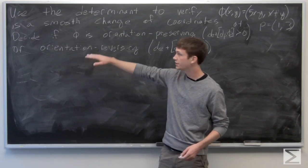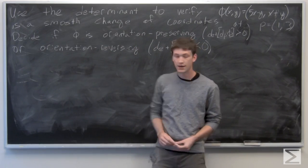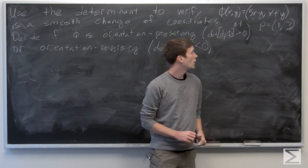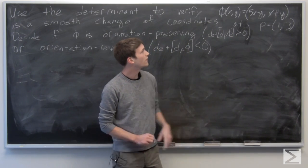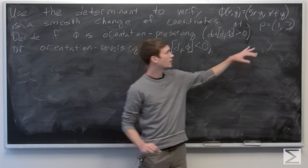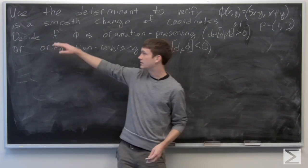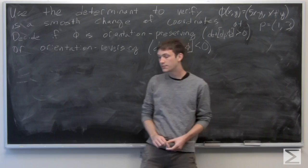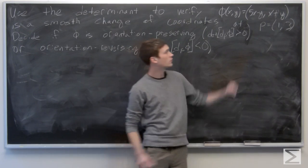In this problem, we're asked to use the determinant to verify that our function phi of x,y equals first component 5x minus y, second component x plus y is a smooth change of coordinates at the point p equals (1,3).